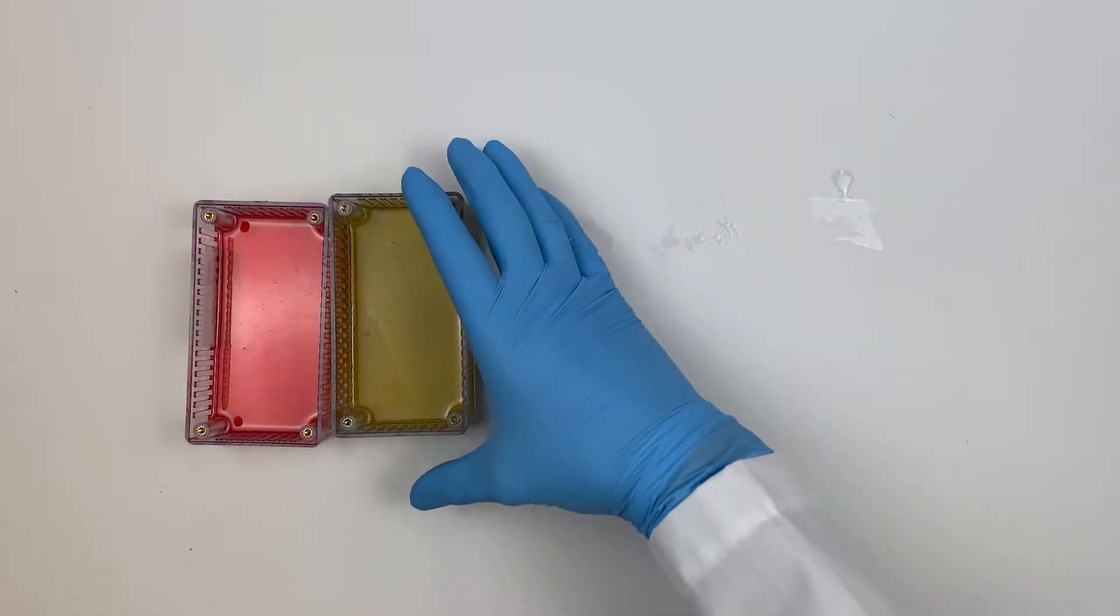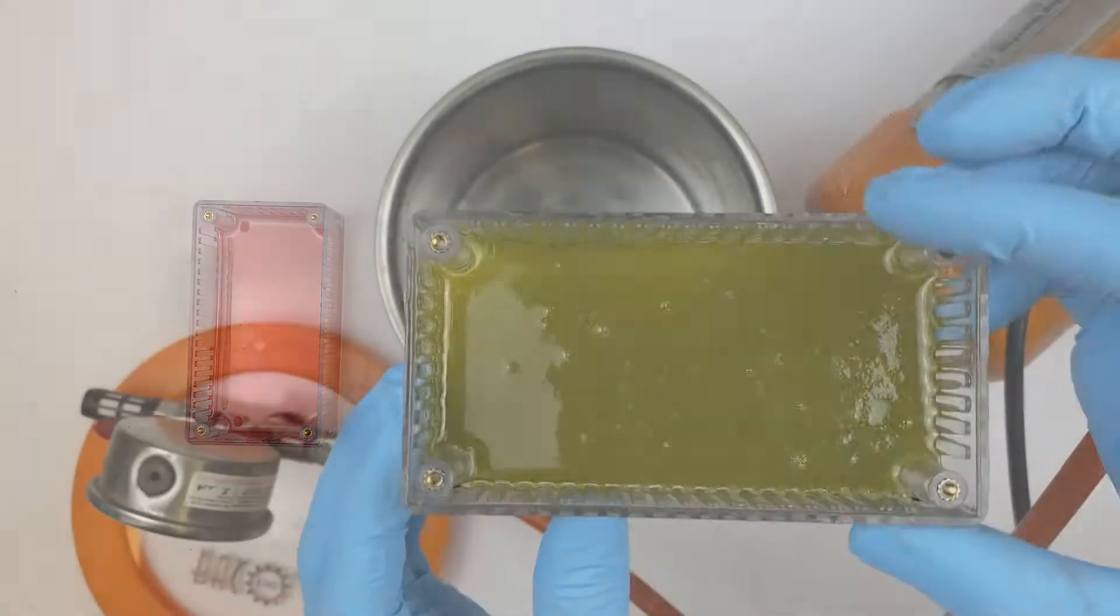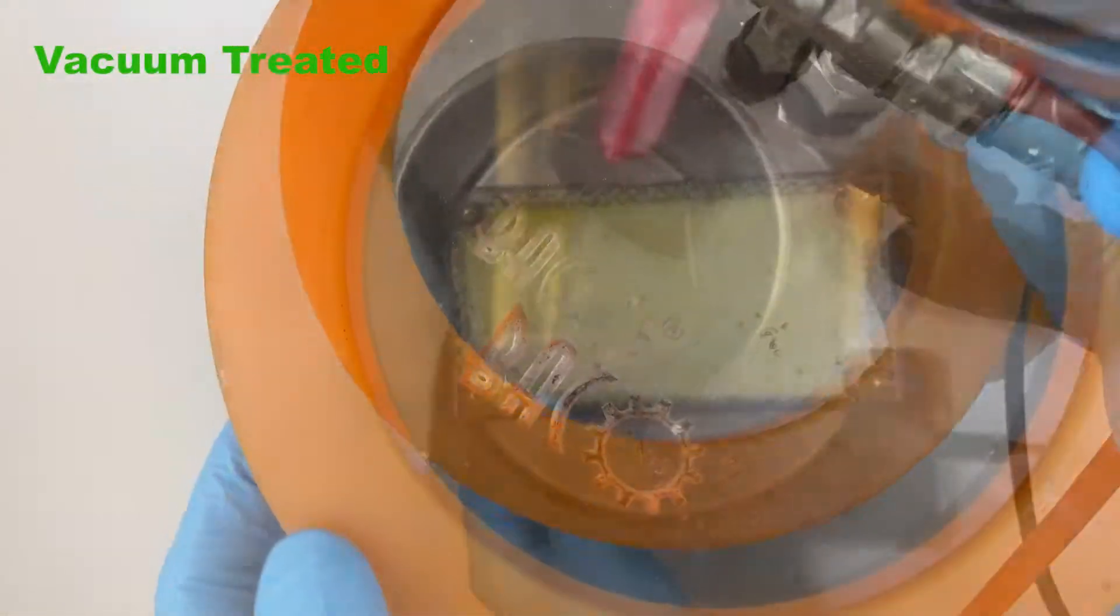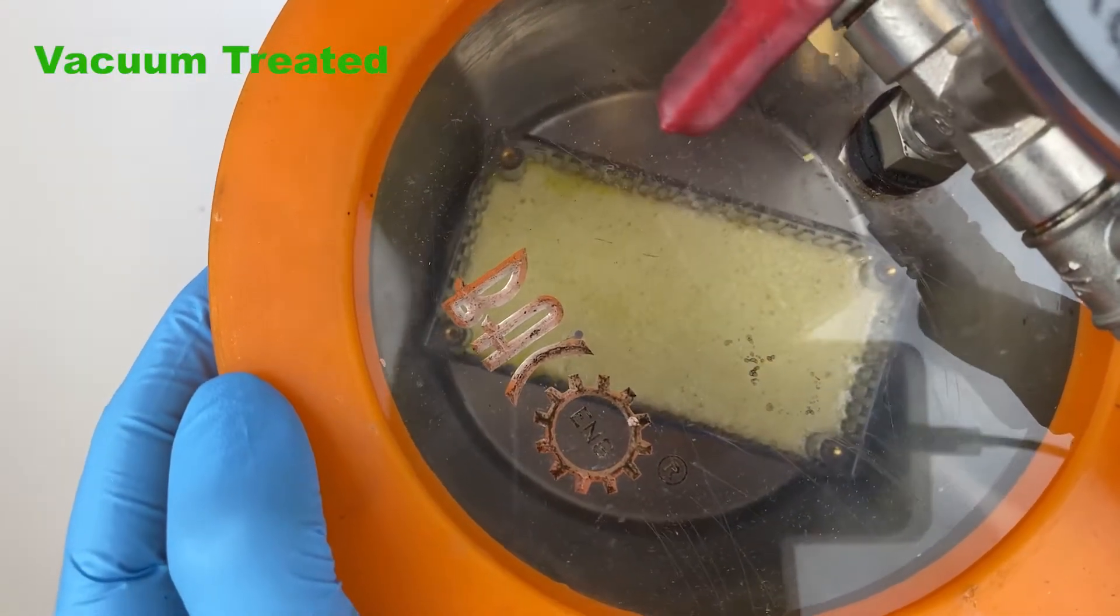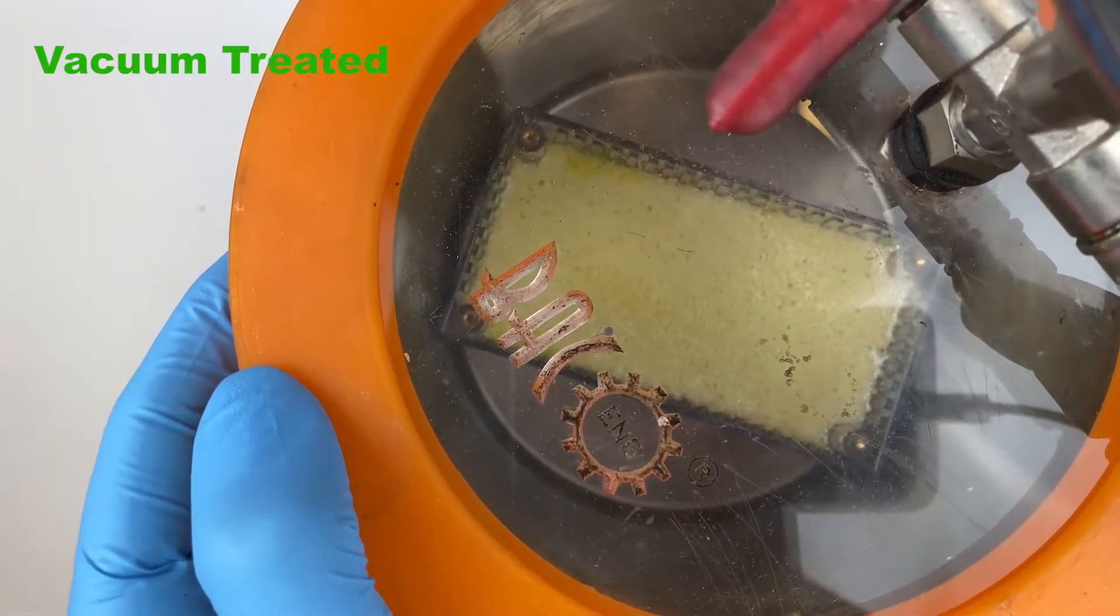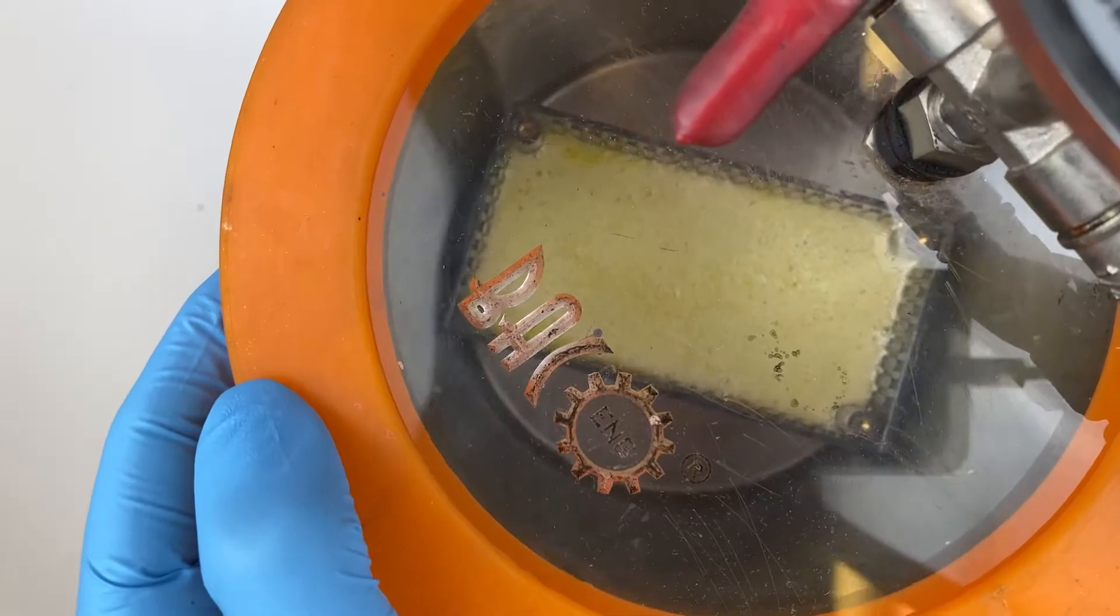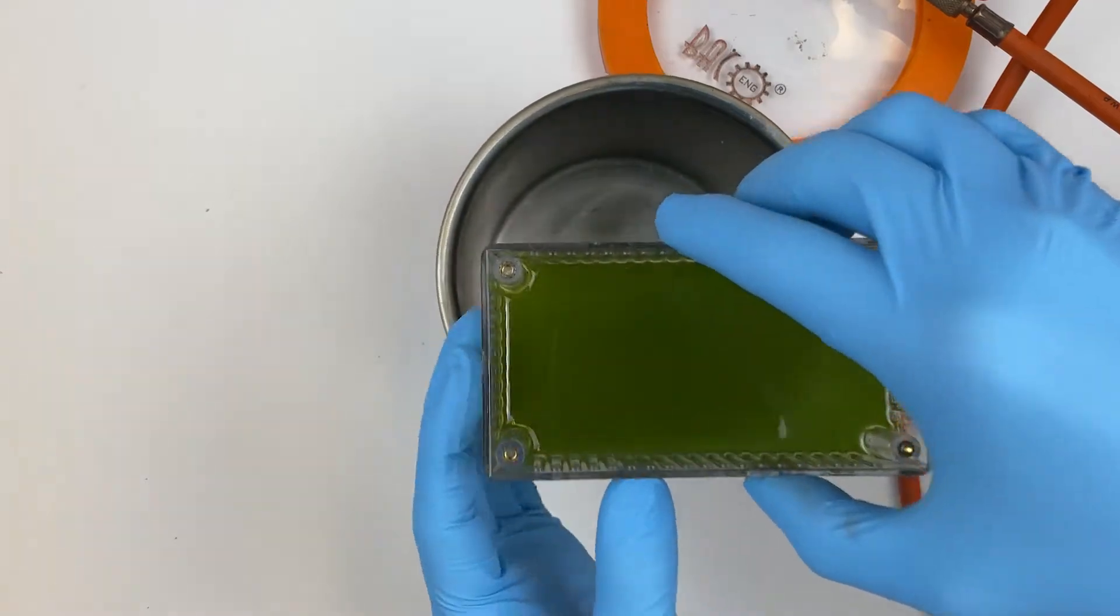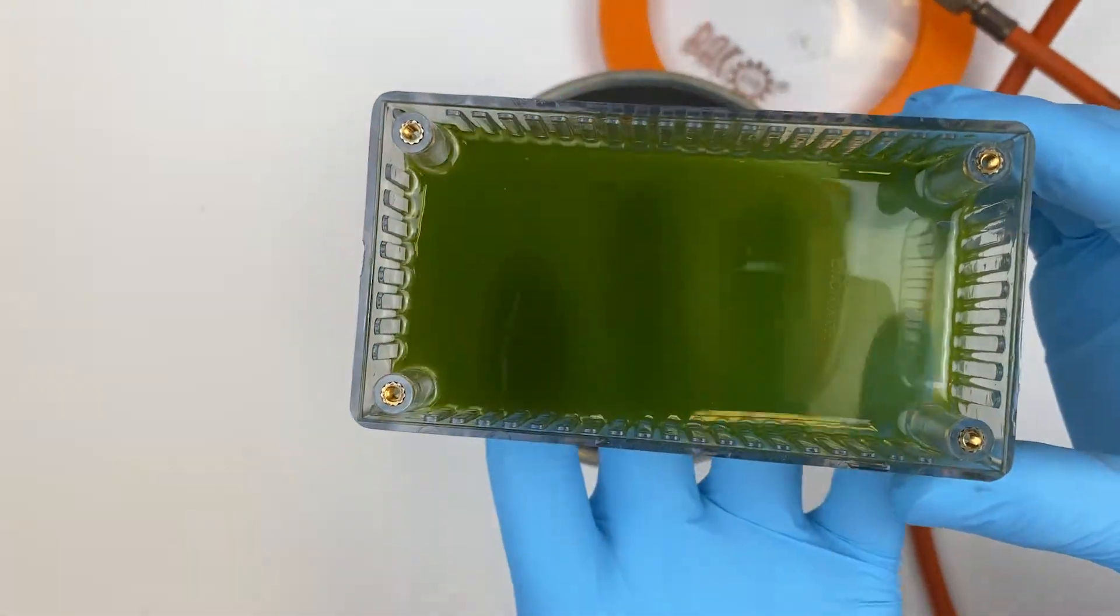This next sample will employ a vacuum degassing technique. For this we need a vacuum chamber and a pump which pulls the air out. The low pressure causes the air to rise to the surface and froth. After some time the bubbles break and recede back to the mixture where the surface eventually becomes smooth.